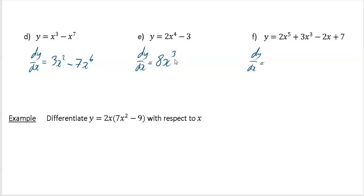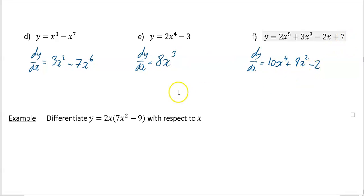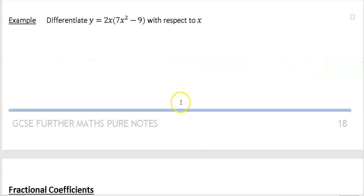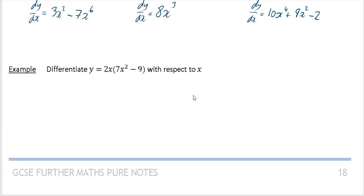Part f — a longer function: 2x to the power 5 — the five multiplies to give 10x to the power 4. The next term: the power of three multiplies up to give 3 times 3 equals 9x squared. Then minus 2x differentiates to give minus 2, and the constant 7 differentiates to give zero.